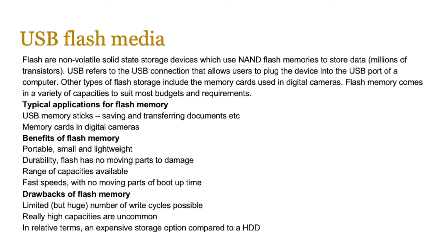USB flash media is exactly the same technology as SSDs — non-volatile solid-state storage devices which use NAND gates, basically millions of transistors in series. USB refers to the connection port that allows users to plug the device into a computer. Other types of flash storage include memory cards such as microSD and SD used in digital cameras. Typical applications include USB memory sticks for saving and transferring documents, and memory cards in digital cameras for photos and videos. Benefits include portability, very small and lightweight form factor, huge range of capacities, fast speeds with no moving parts and less heat. Drawbacks are a limited number of write cycles and they're more expensive compared to HDDs, CDs and DVDs.